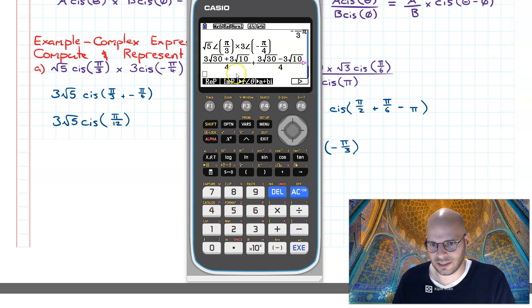I hit execute and it gives it to me in rectangular form. Now the question explicitly stated we want polar form, so what I'm going to do is take it back. We'll hit execute, then we're going to go shift answer and request it changed to polar form.